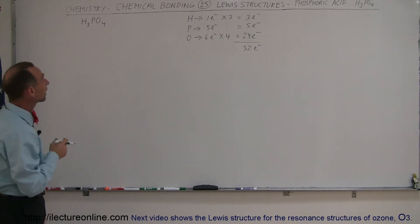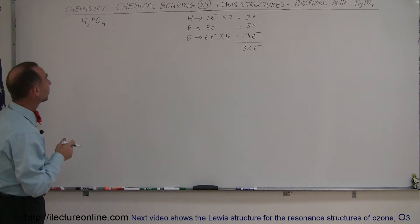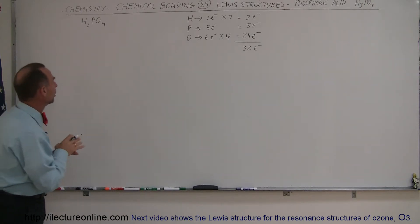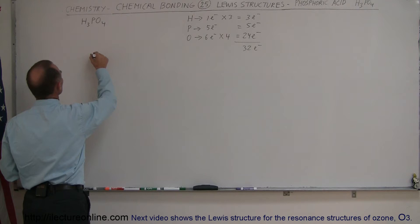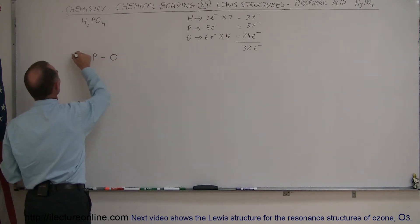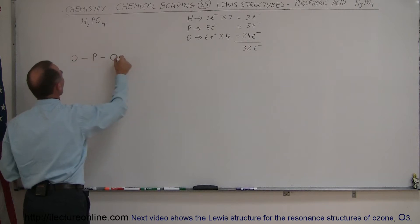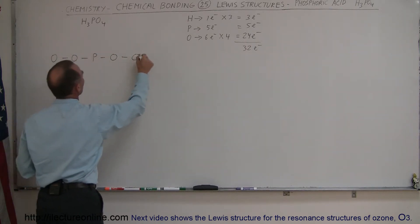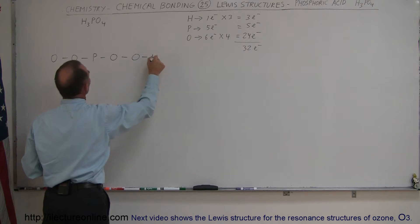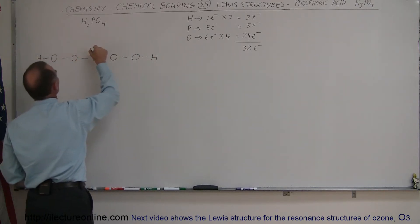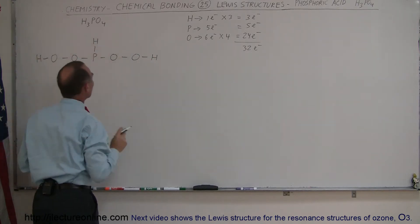Phosphorus has the lowest electronegativity, so we expect it to be in the center of the structure. Now notice, we could potentially draw it like this: phosphorus in the middle, with an oxygen there, an oxygen there, another oxygen there, another oxygen there, and a hydrogen on one end, a hydrogen on the other end, and a hydrogen on this end.